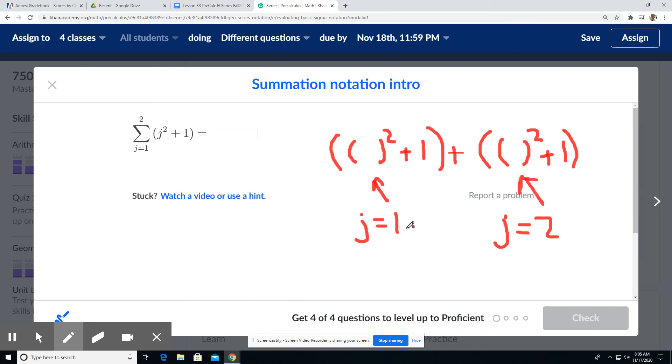So we'll just go ahead and evaluate it. Let me go ahead and switch colors. So it's a little bit easier to see. So a 1 is going to go in here. And a 2 is going to go in here. Do our order of operations. 1 squared is 1. 1 plus 1 is 2. Plus 2 squared is 4. 4 plus 1 is 5. So I get the answer of 7 here for this solution.